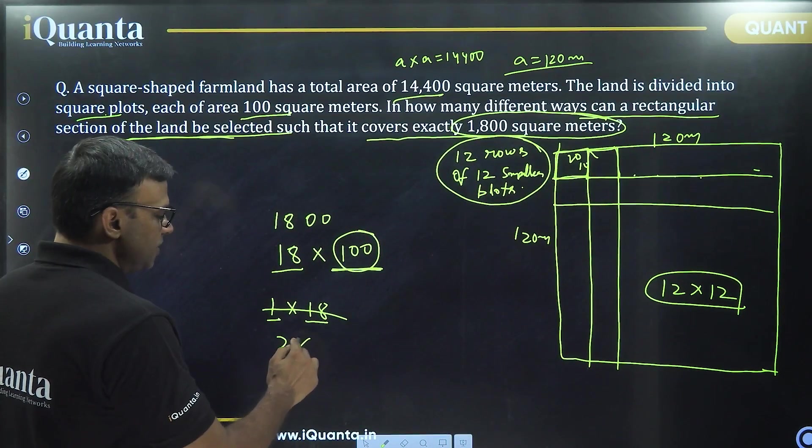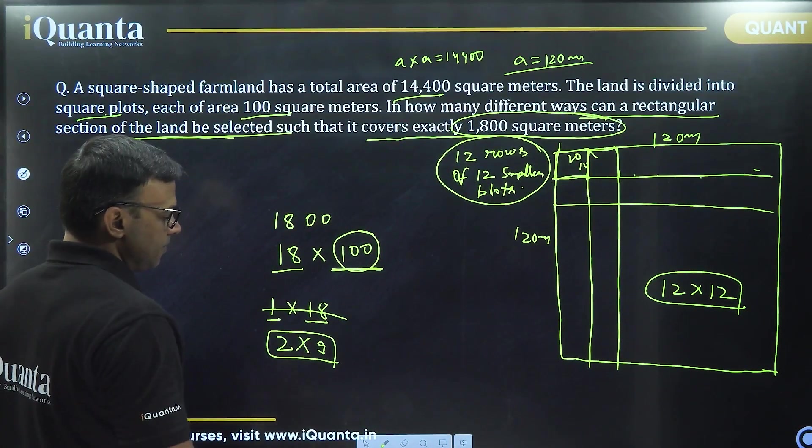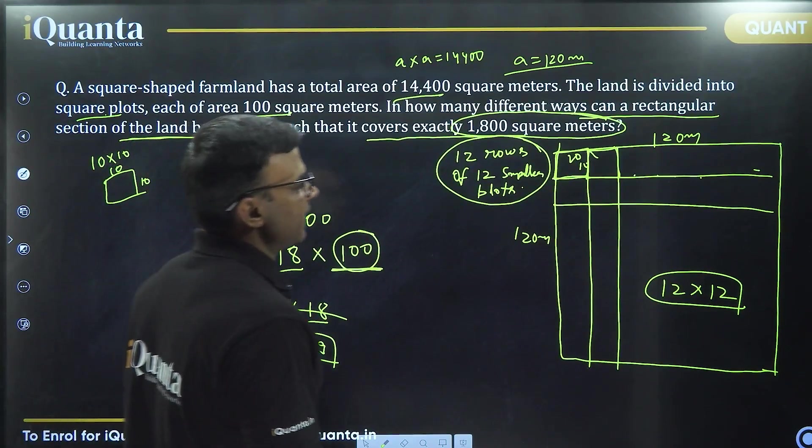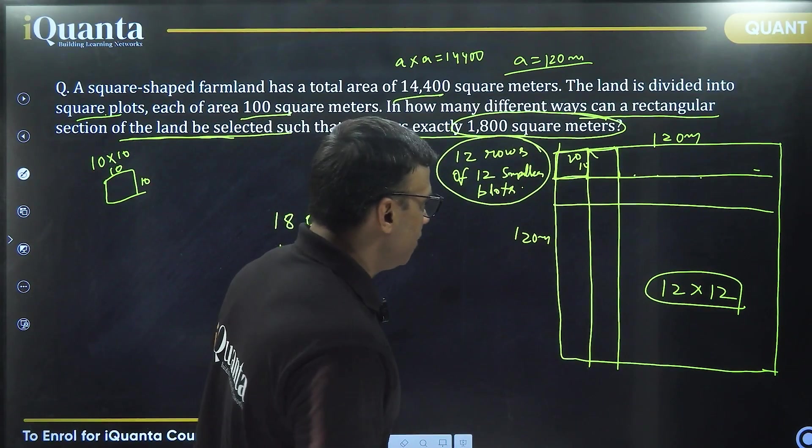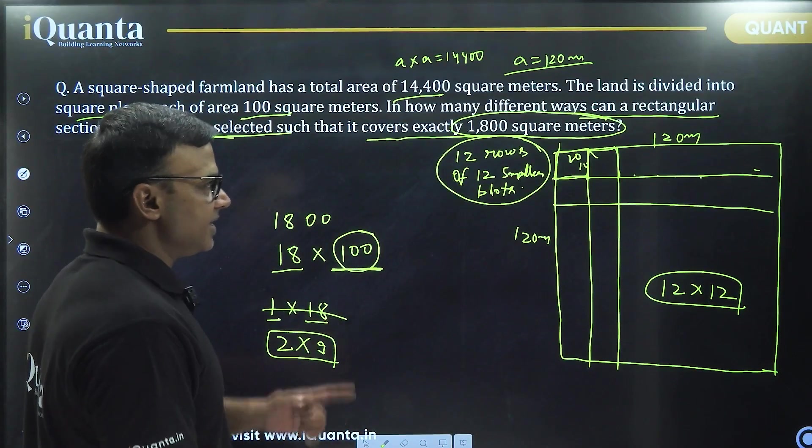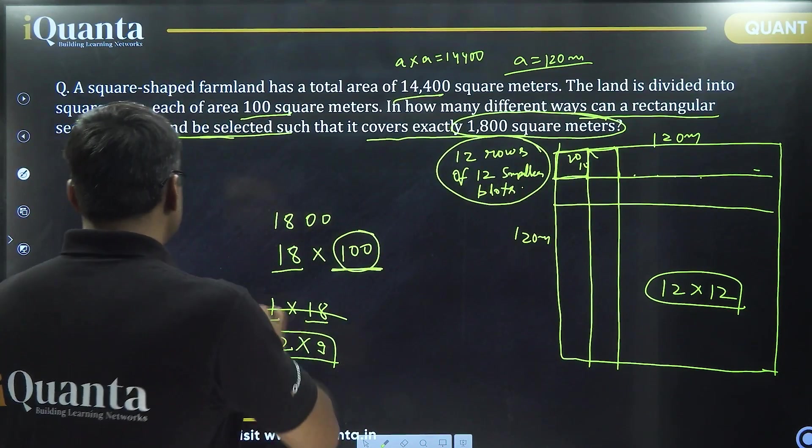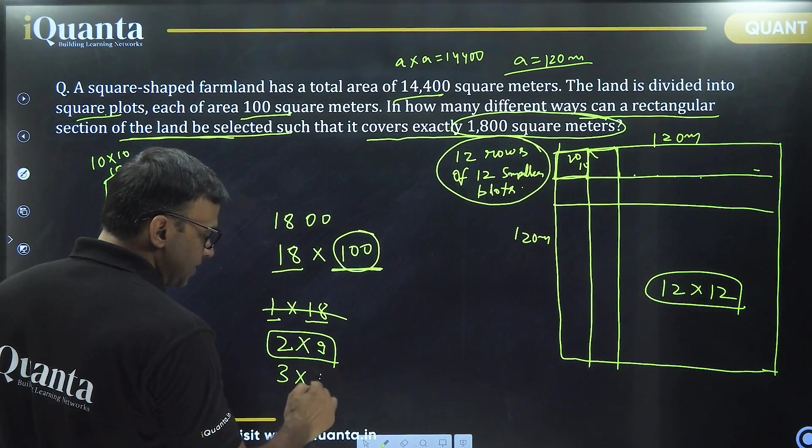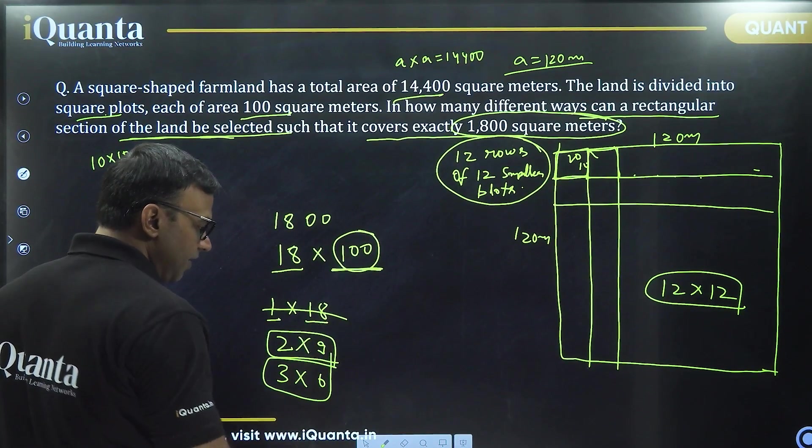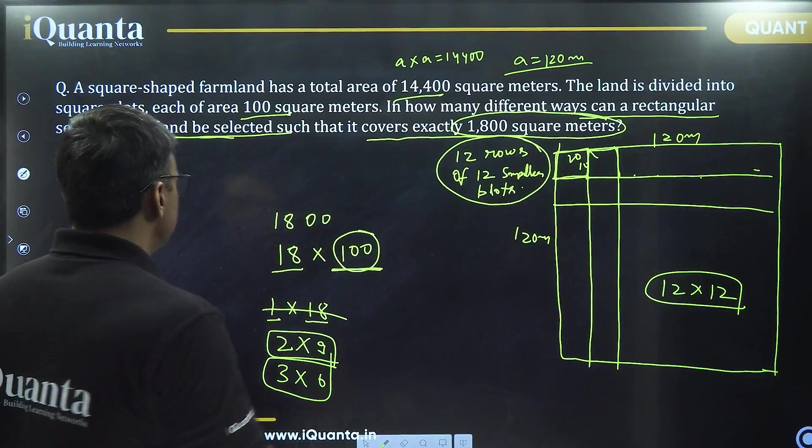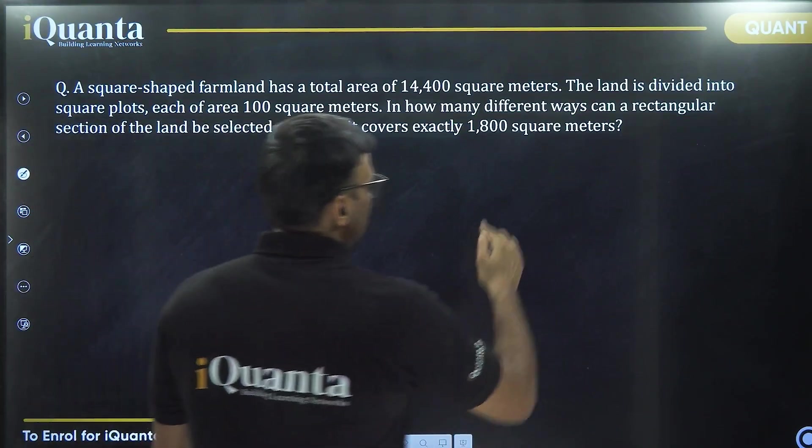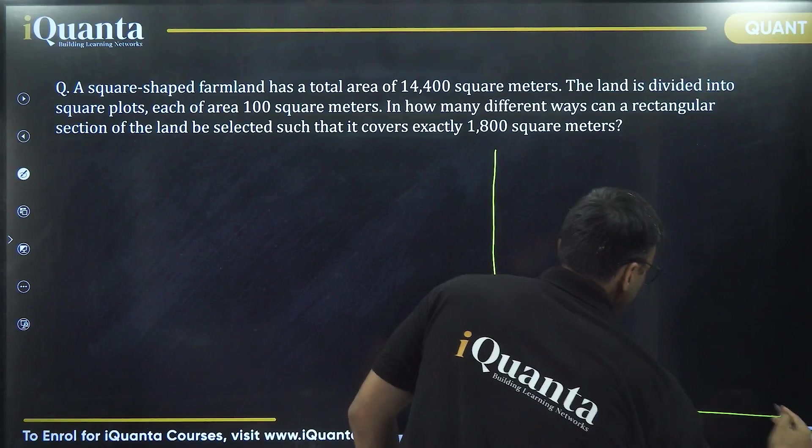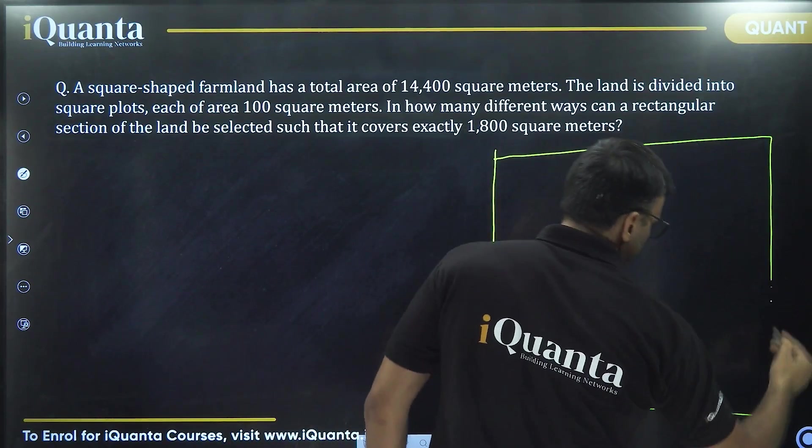Can we have 2 into 9? So 2 rows of 9 plots. Yes, that is possible. How do we do the counting? It is exactly same as chessboard. So I'll just clean this up. Now I know that 2 into 9 is one possibility and similarly 3 into 6 is also a possibility. We will have to do the counting one by one. I'm going to do everything in detail, so please watch very carefully.